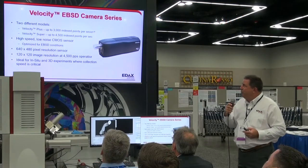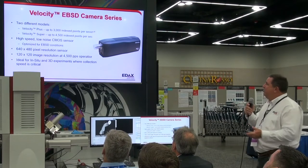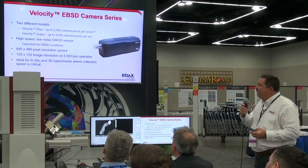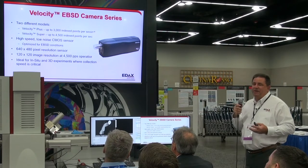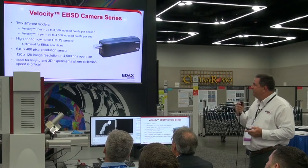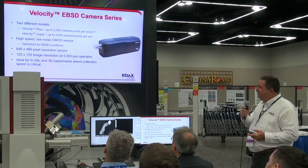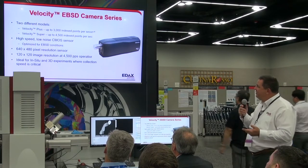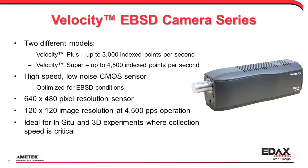This has all been rolled into a product called the Velocity, which comes in two different models. The Velocity Plus operates up to 3,000 index points per second, and the Velocity Super goes up to 4,500 index points per second, really driven by the high-speed, low-noise CMOS sensor customized for EBSD operation. It allows 120 by 120 pixel image resolution at those high speeds — an ideal detector for in-situ and 3D experiments, as well as everyday operation for large data sets.